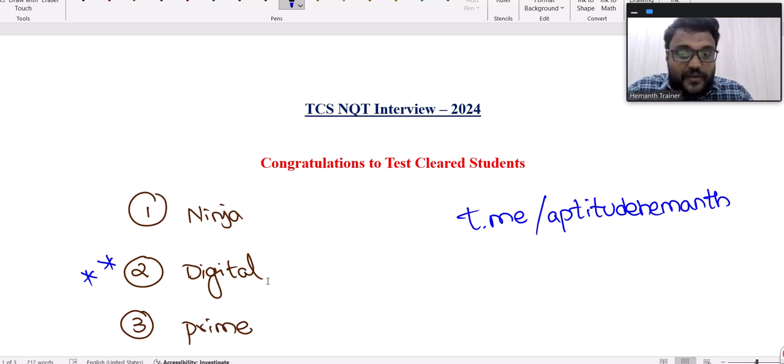Suppose you got opportunity for Digital or Prime and you don't perform well in that interview, then again they'll give a chance for Ninja. If you don't perform well in Ninja also, then that's it - this is for first time opportunity students.